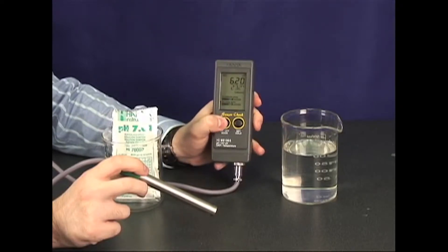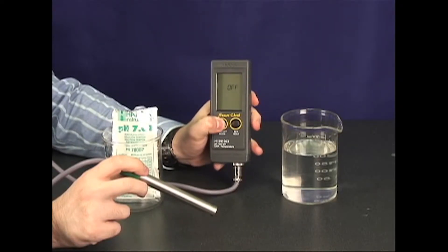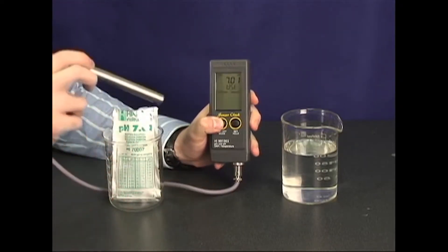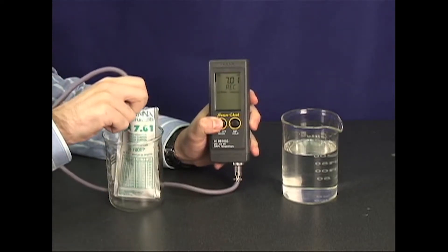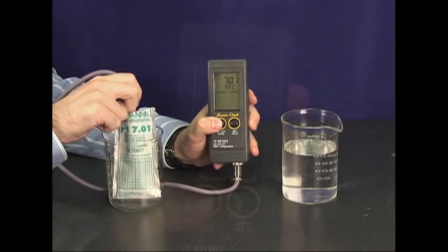To calibrate, hold the mode button down for three seconds until the meter prompts you to use seven buffer. Then place the probe in the seven buffer and calibrate. It's that easy.